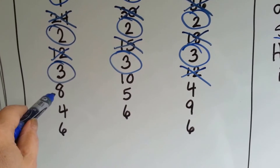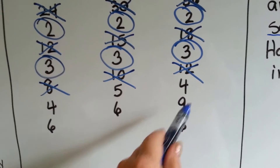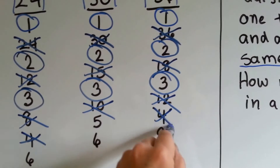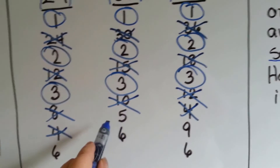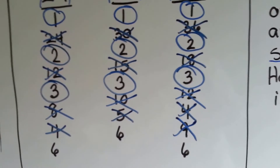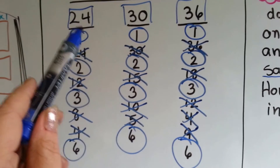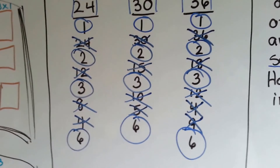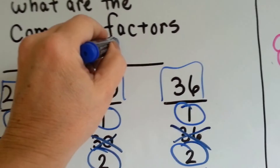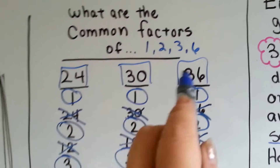Do they all have an 8? Nope. A 10? Nope. A 4? Well, 24 has a 4 but 30 doesn't, so 4 is not a common factor. A 5? Nope — 30 is the only one with a 5. And 36 is the only one with a 9, so that's not a common factor either. But they do all have a 6. So the common factors for 24, 30, and 36 are 1, 2, 3, and 6.